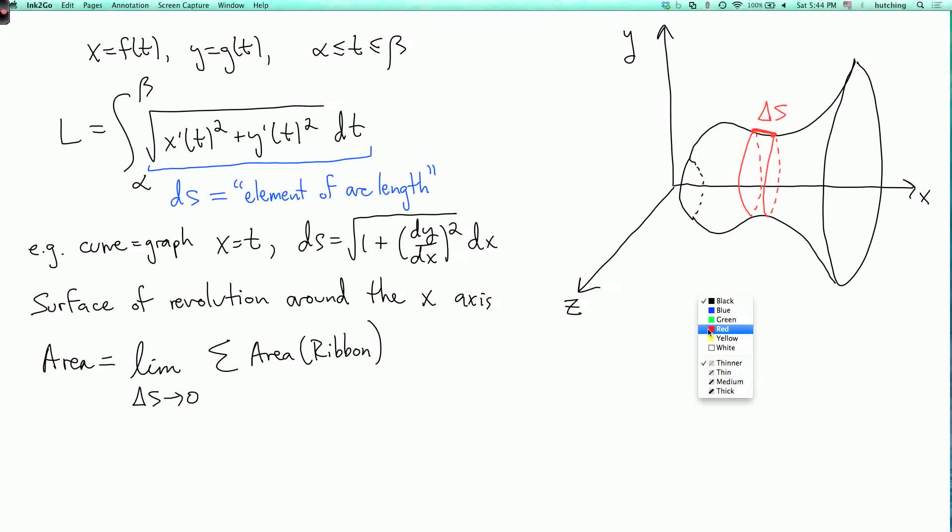Now what is the area of a ribbon? Well, this ribbon is approximately going around a circle of radius y, where y is the value of y somewhere on this segment, because the distance to the x-axis is equal to y. And so the circumference of the circle is going to be two pi y. And then the length of this little segment that we're rotating is delta s. You can then show that in this limit, the limit becomes the integral where the delta s turns into a ds. So we get two pi y ds.